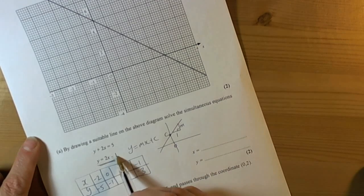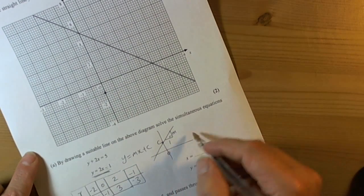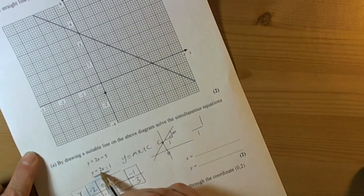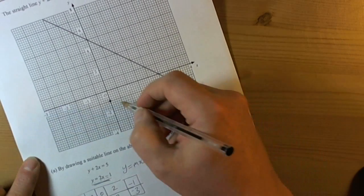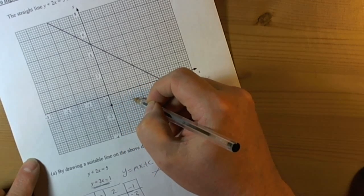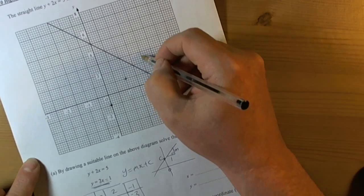The function here ends in minus 1, so I'm going to start at minus 1. The gradient tells me that for every one I go across, because it's got a gradient of 2, the number in front of the x, the coefficient, it tells me the gradient. So for every one I go across, I'm going to go up 2.